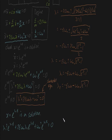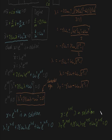We can say the exact same for the other solution. We know that x equals e to the lambda 2 t is a solution. And this means if we substitute x equals e to the lambda 2 t into here, then it will be equal to zero.